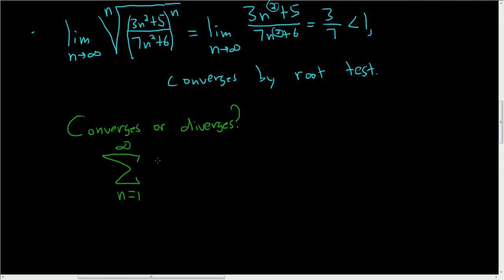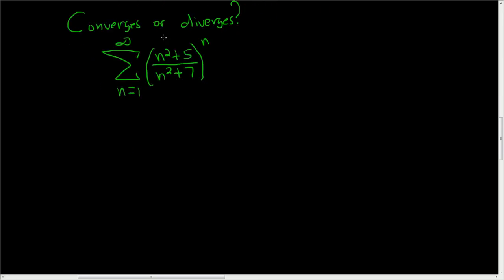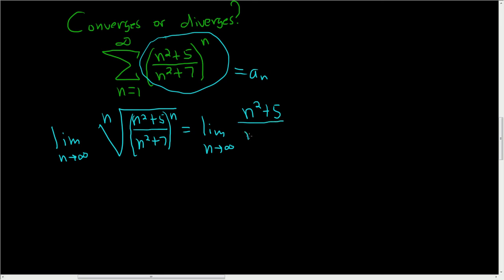Let's go from 1 to infinity of (n²+5) over (n²+7), raised to the nth power. Using the root test, our a sub n is this expression. We take the limit as n approaches infinity of the nth root of (n²+5) divided by (n²+7), all raised to the nth power. The n's go away, so you get the limit as n approaches infinity of (n²+5) over (n²+7). Both have degree 1, so the answer is 1 over 1, which is 1.